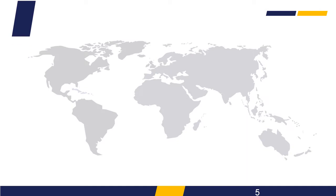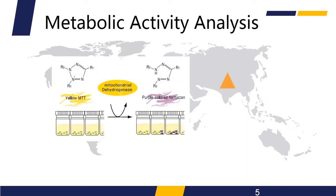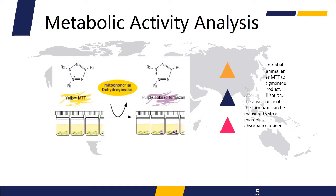Using colorimetric indicators provides a rapid and cost-effective method for determining changes to mammalian cell proliferation. Among the various colorimetric viability assays, the MTT assay is a well-established and popular assay.